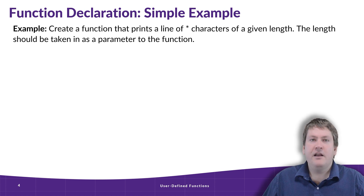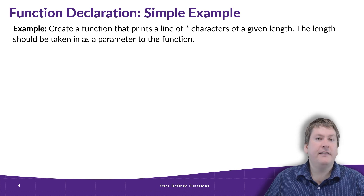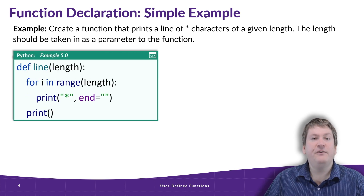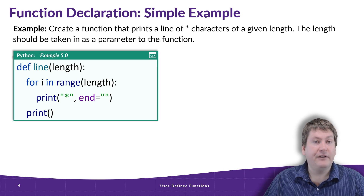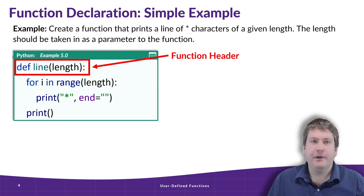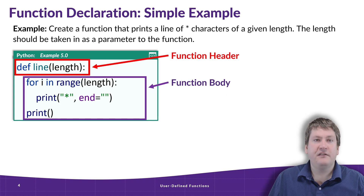In this example, we're going to define a function that prints a line of asterisk characters of a given length. If we input a one, that's going to be one asterisk character; if we input a five, it will be five asterisk characters in a row. The first line of the function is the function header, which contains all those elements we just talked about. The other big part is the function's body — these are all the statements that are going to be executed when we call this function.